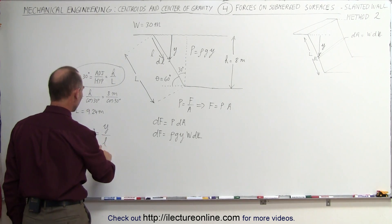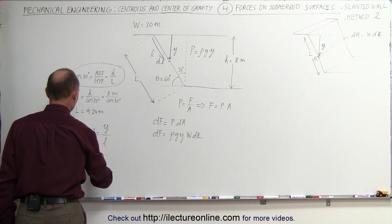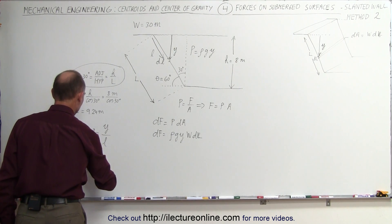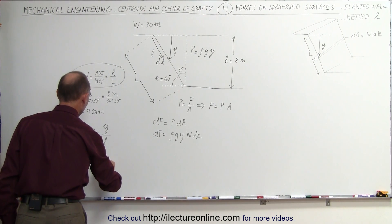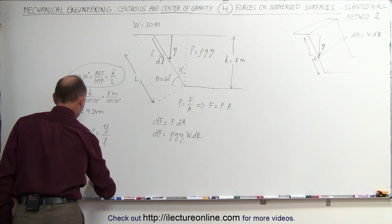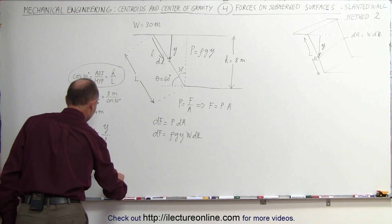Let's do that. In this case, we can say that l is equal to y divided by the cosine of 30 degrees, or y is equal to l times the cosine of 30 degrees.